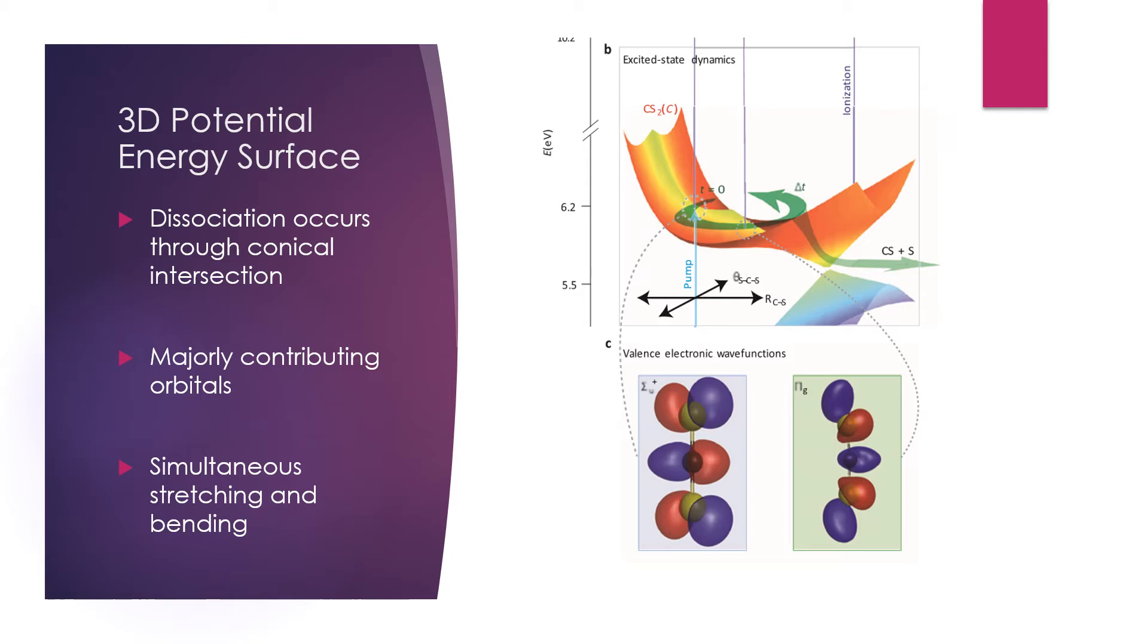Firstly, it's worth pointing out that the dissociation to carbon sulfide and sulfur occurs through a conical intersection.